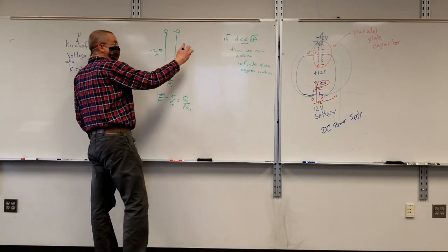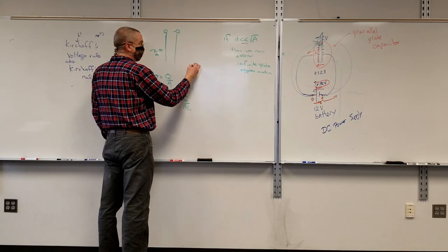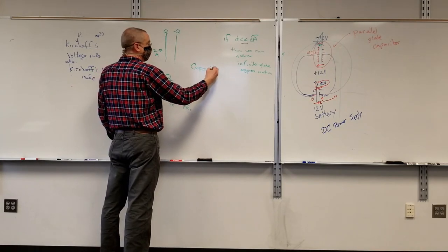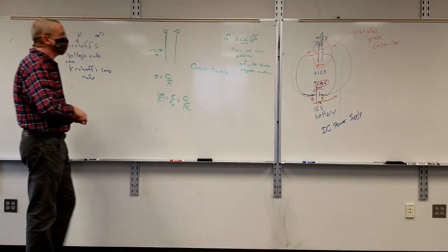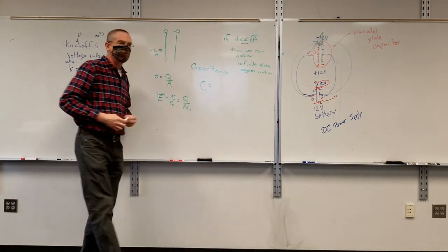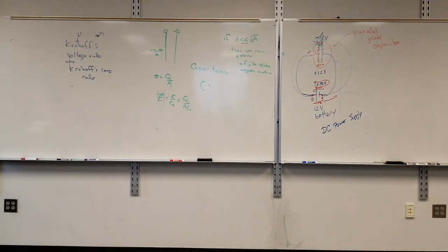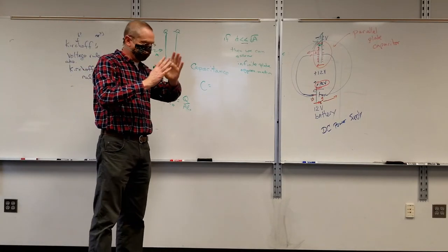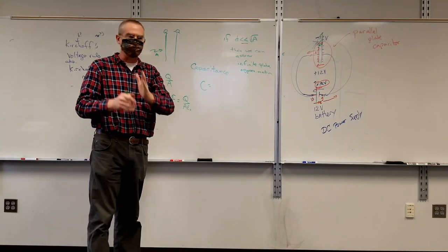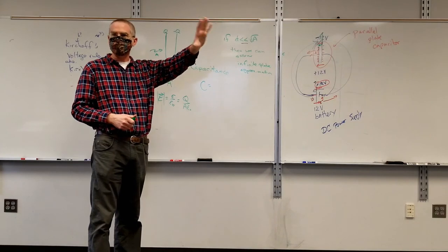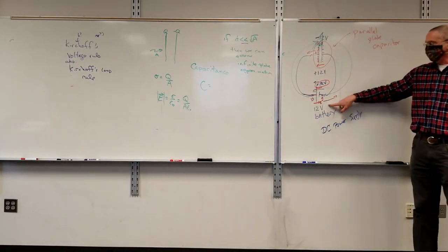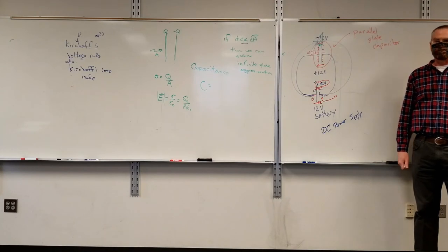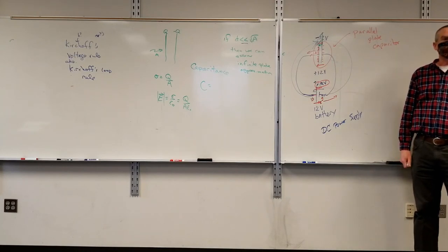The thing I should introduce is this idea of capacitance, symbolized by the letter C. So I have these two plates — they have some physical size, they're some physical distance apart, there's something physically in between them. If I double the voltage of the battery, what's that going to do to the charge on the plates? It's going to double it.